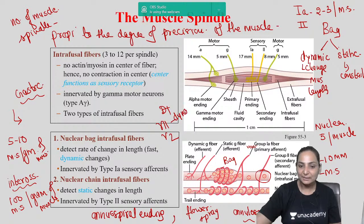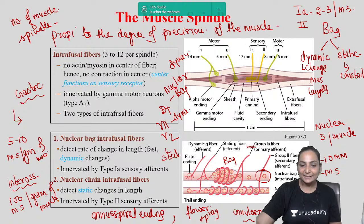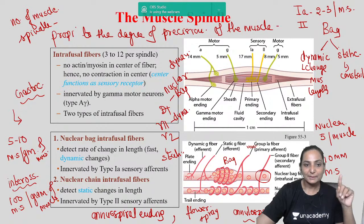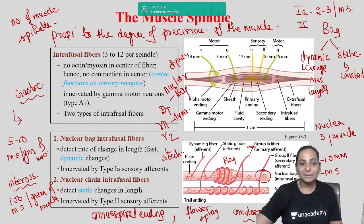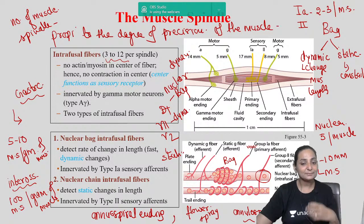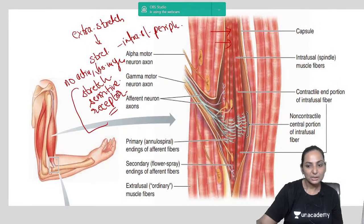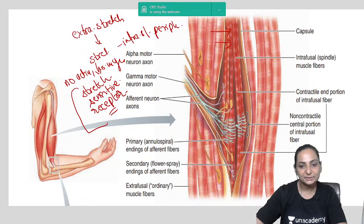The efferents are gamma 1 and gamma 2. Gamma 1 is dynamic, supplying the nuclear bag fibers, and is responsible for the dynamic stretch reflex. Gamma 2 supplies the static fibers and conveys information about the static length of the muscle. The central equatorial region is non-contractile — no actin, no myosin — and is a purely stretch-sensitive receptor.